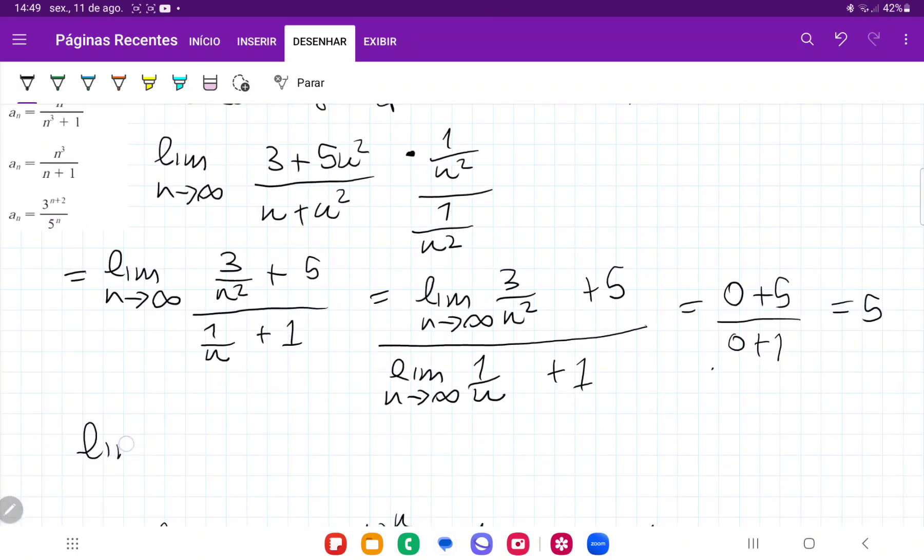And so we can say that the limit as n approaches infinity of a_n is equal to 5, therefore a_n converges. And yeah, that is it for number 25.